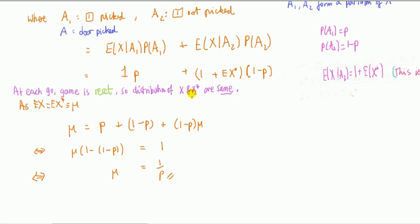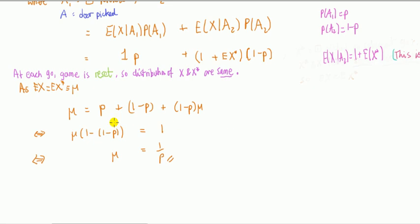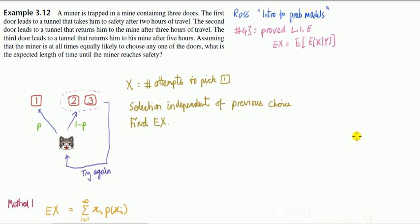Let X star be that one is picked on subsequent trials. So if it's not picked on this one, it's picked on subsequent trials. Then this is: if you don't pick the right door one on this occasion, you've used one go plus and then you're facing the same scenario again. But we've said that each go is like the game is reset because you've forgotten what's happened before. That means the distribution of X and X star are the same. Because they're the same, they have the same mean. So we just substitute into here and solve. The mean of X is the same as the mean of X star, let's call that mu.